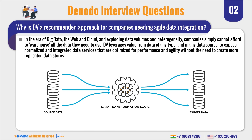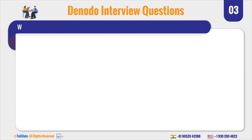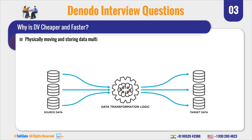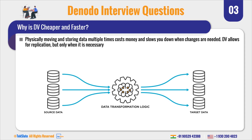Moving to the next question: why is DV cheaper and faster? Physically moving and storing data multiple times costs money and slows you down when changes are needed. If you have servers or a database at your physical location and you want to migrate or move to a different location, it would be very difficult to move whole database servers without damaging them.